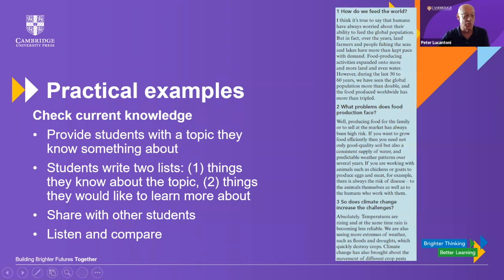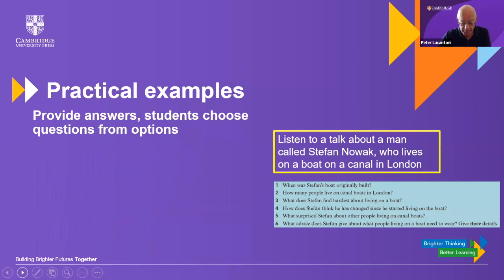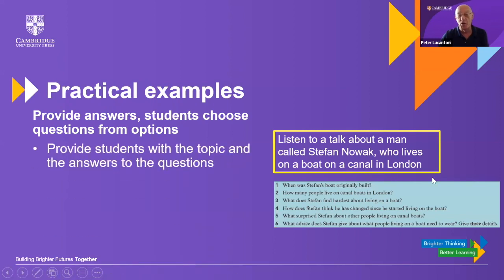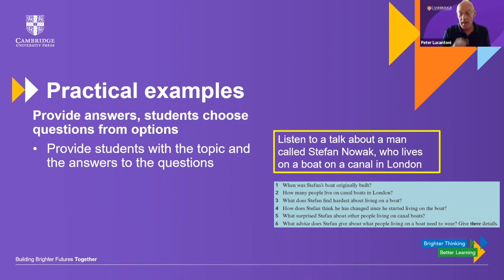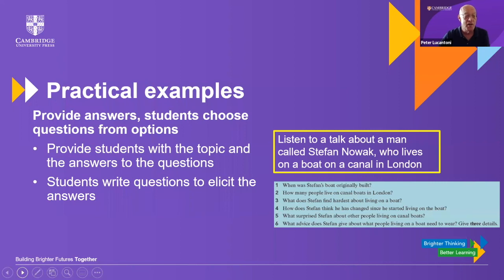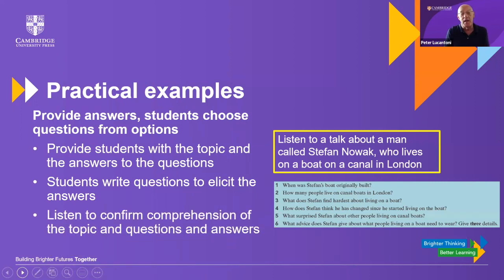Another practical example: we provide the answers to questions and students choose questions from options. Give students a topic — for example, a talk about a man called Stefan Nowak who lives on a boat on a canal in London. These are the original questions from the course book, which you don't give to students because they need to predict what the questions are. You give them the answers and they need to write the questions to elicit those answers, then listen to confirm their comprehension of both the topic and the question-answer structure.